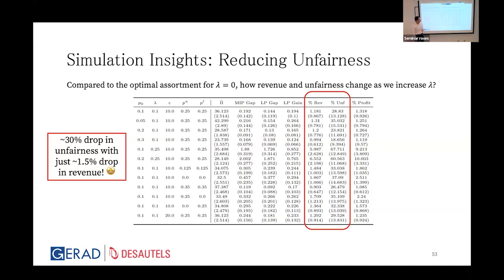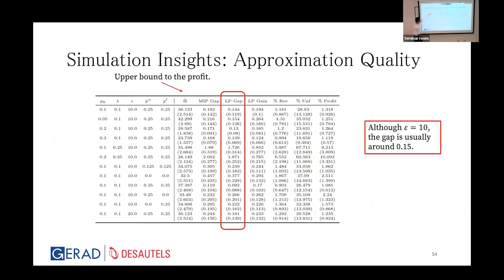A small drop in revenue of 1.5% can yield a 30% drop in unfairness. Telling a retailer to set lambda=0.25 and lose 6% of revenue would get a very bad reception, but a small dent is feasible. Regarding approximation quality: setting epsilon as large as 10 or 20, the gap between the upper bound on profit and what the AMWU finds is only about 0.15, meaning we are very close to optimal even with a large epsilon.